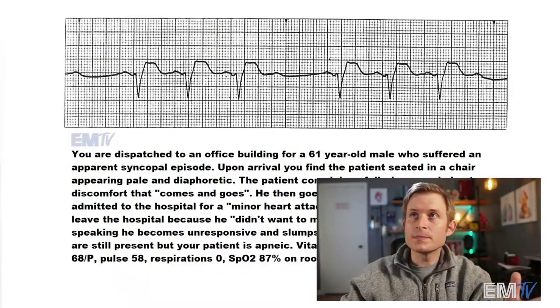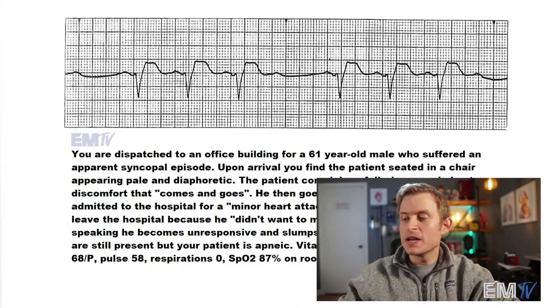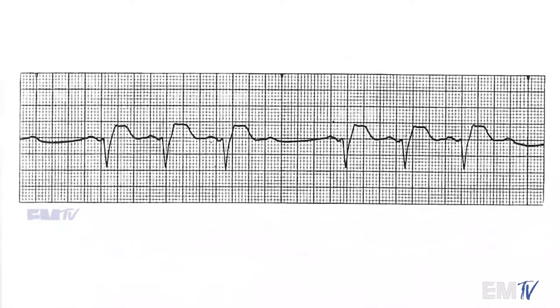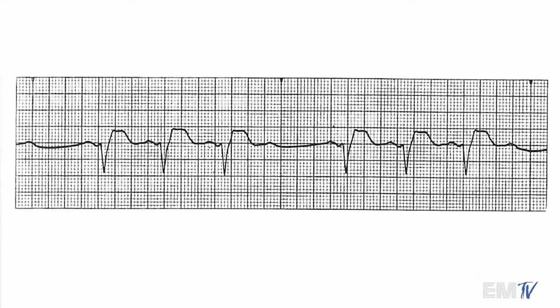All right. How do you think you did? Let's go ahead and examine the rhythm and see if we can identify it. First thing I'm looking at here is the rate. I'm counting six QRS complexes, so this is going at 60 beats per minute.